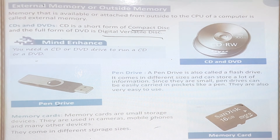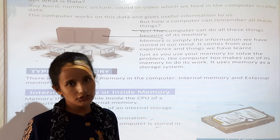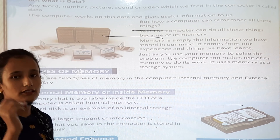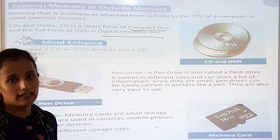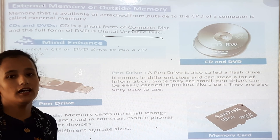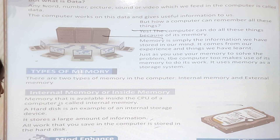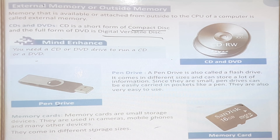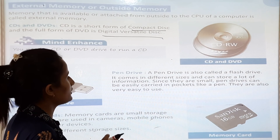We have finished the chapter. What we learned today: a computer has two types of memory — internal memory and external memory. Internal memory is the memory available inside the computer's CPU, like the hard disk, and it has a large amount of storage. External memory is used outside the CPU, like CD, DVD, pen drive, and memory card. External memory has smaller storage, like memory cards used in mobiles and cameras.